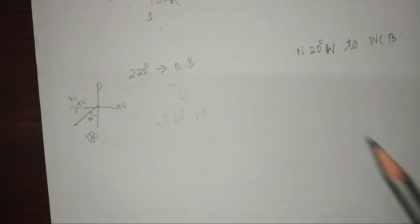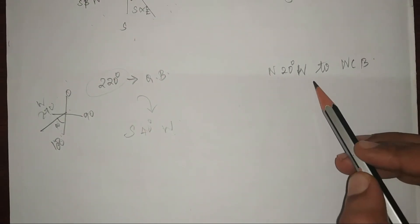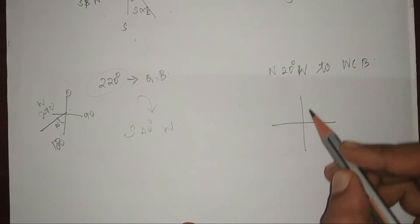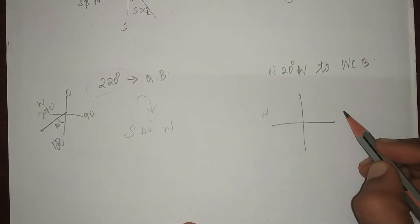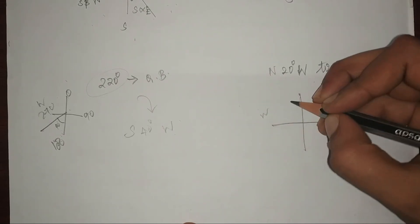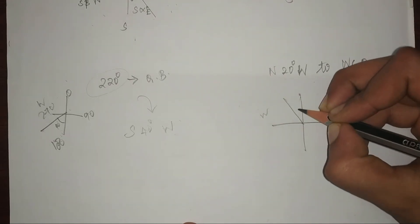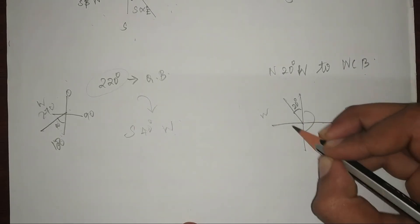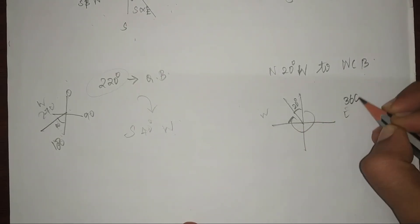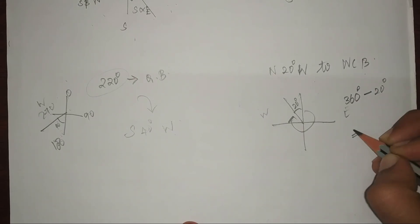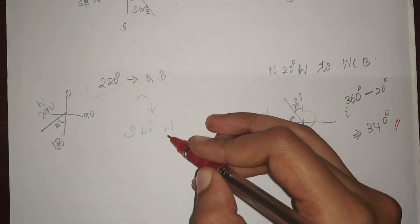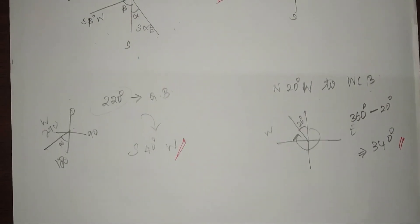Now convert North 20 degrees West to whole circle bearing. North 20 degrees West means 20 degrees from north towards west. All you have to do is find 360 minus 20 degrees, which equals 340 degrees. So 340 degrees is our answer in whole circle bearing.